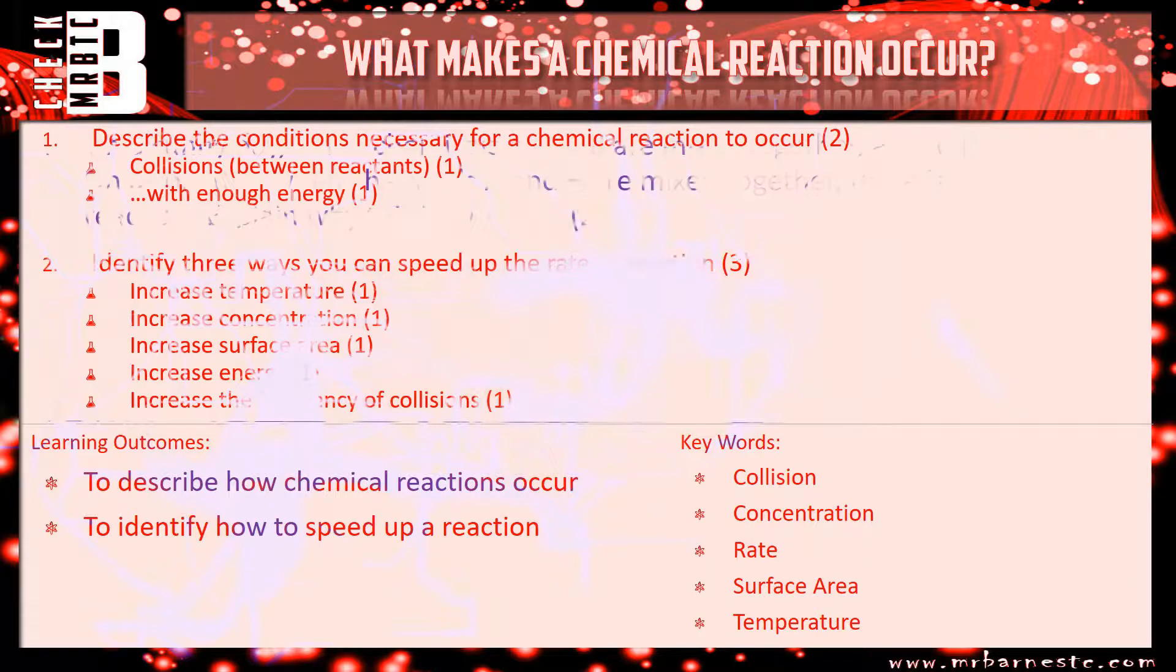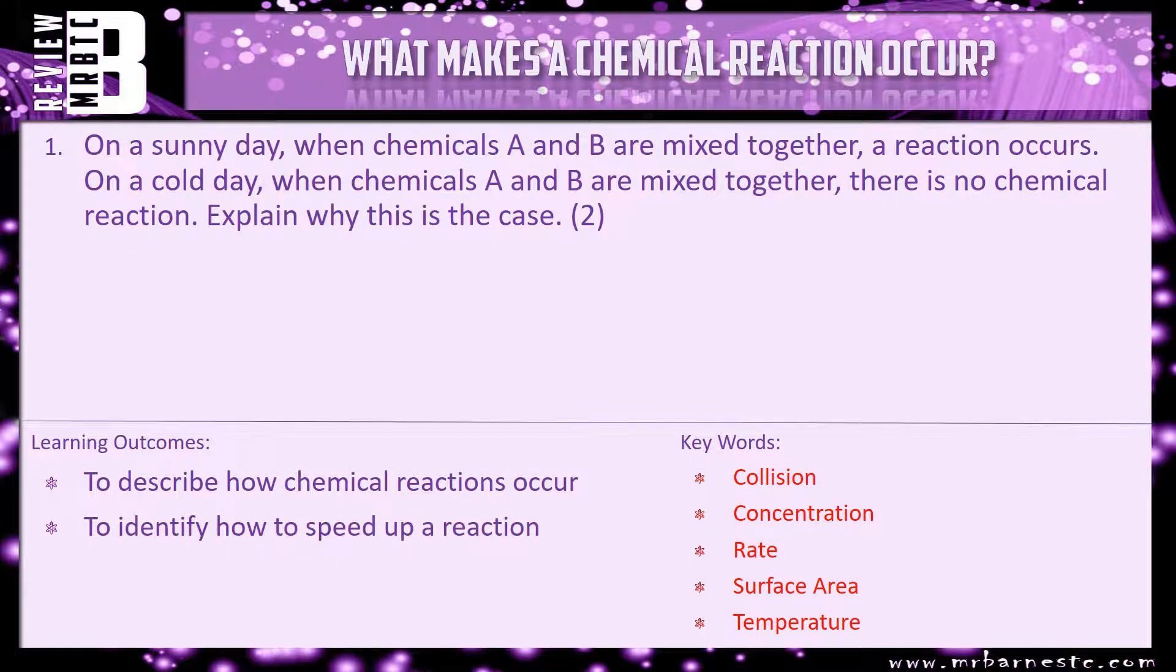Let's move on to the review question, which is: on a sunny day when chemicals A and B are mixed together, a reaction occurs. On a cold day when chemicals A and B are mixed together, there is no chemical reaction. Explain why this is the case. So again, talk about the collisions and talk about what happens on a cold day in terms of energy. That brings this video to an end.